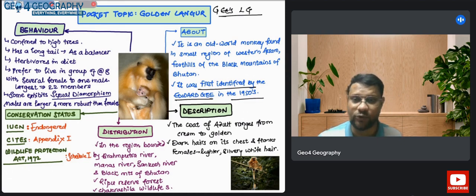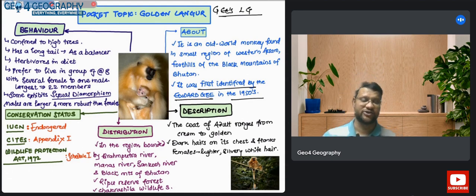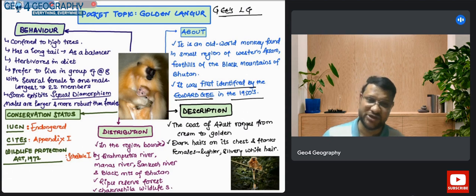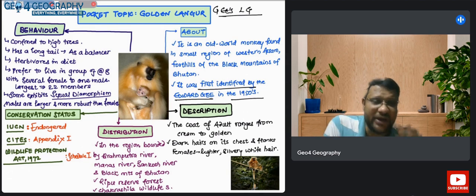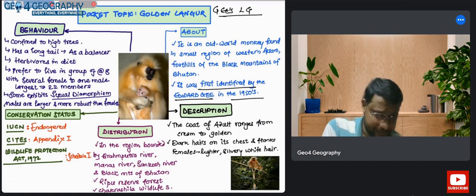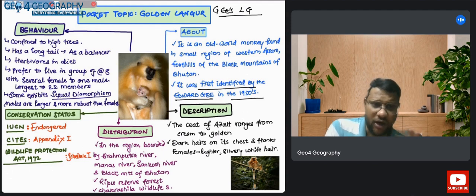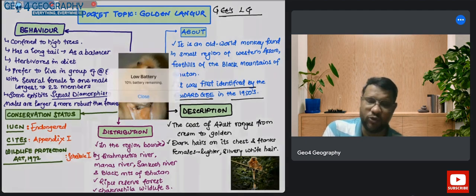The name itself indicates the species is golden in appearance. The hair color that you will find is creamy golden to cream color, generally golden in nature. That's why this species is called Golden Langur - the individuals are golden color, hence the name Golden Langur.